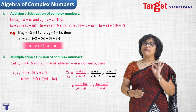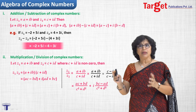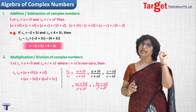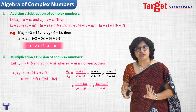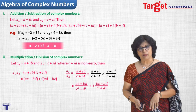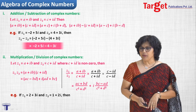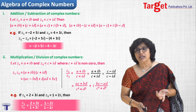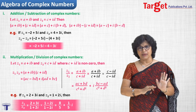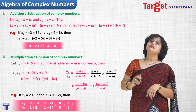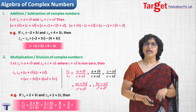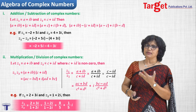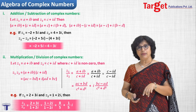Notice that in all four operations — addition, subtraction, multiplication, and division — the answer is again a complex number. These four operations are therefore binary operations on the set of complex numbers. For example, if z1 equals 2 plus 3i and z2 equals 1 plus 2i, then z1 upon z2 is obtained by multiplying and dividing by (1 minus 2i), and simplifying to get 8/5 plus (1/5)i — again in the form a plus ib, a complex number.